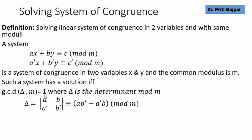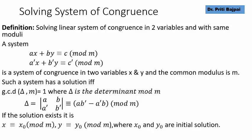Here we see we have the determinant as ab dash minus b into a dash moduli m and if the gcd is 1, it is solvable.